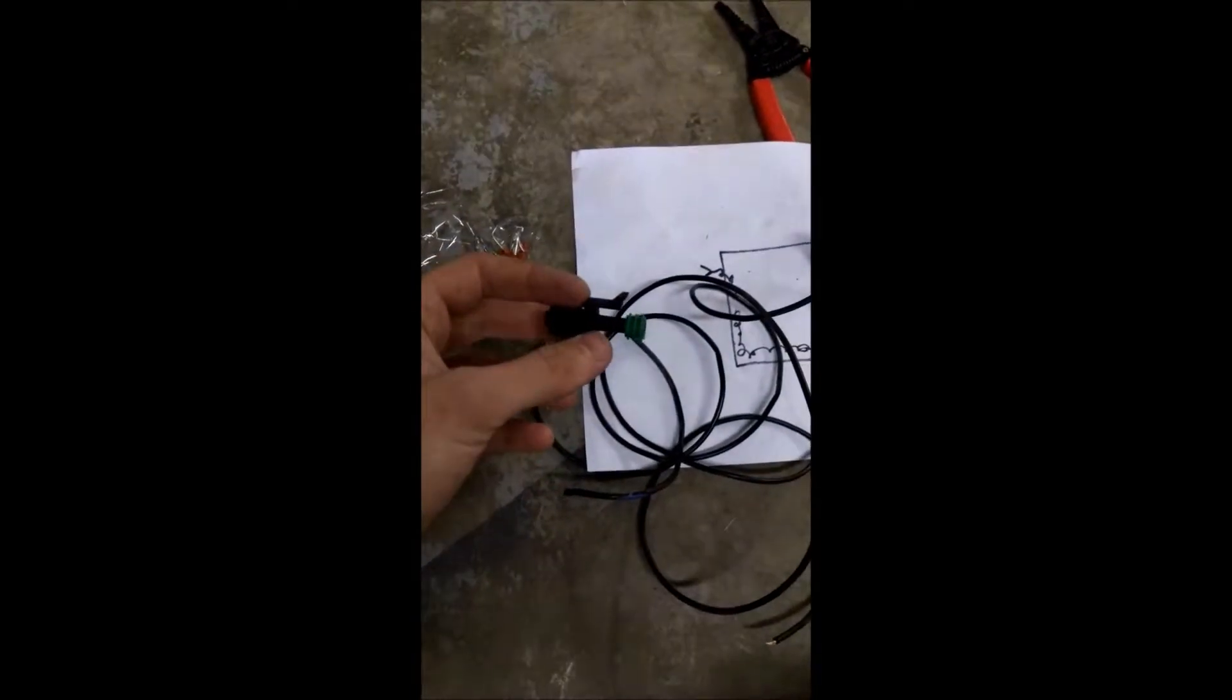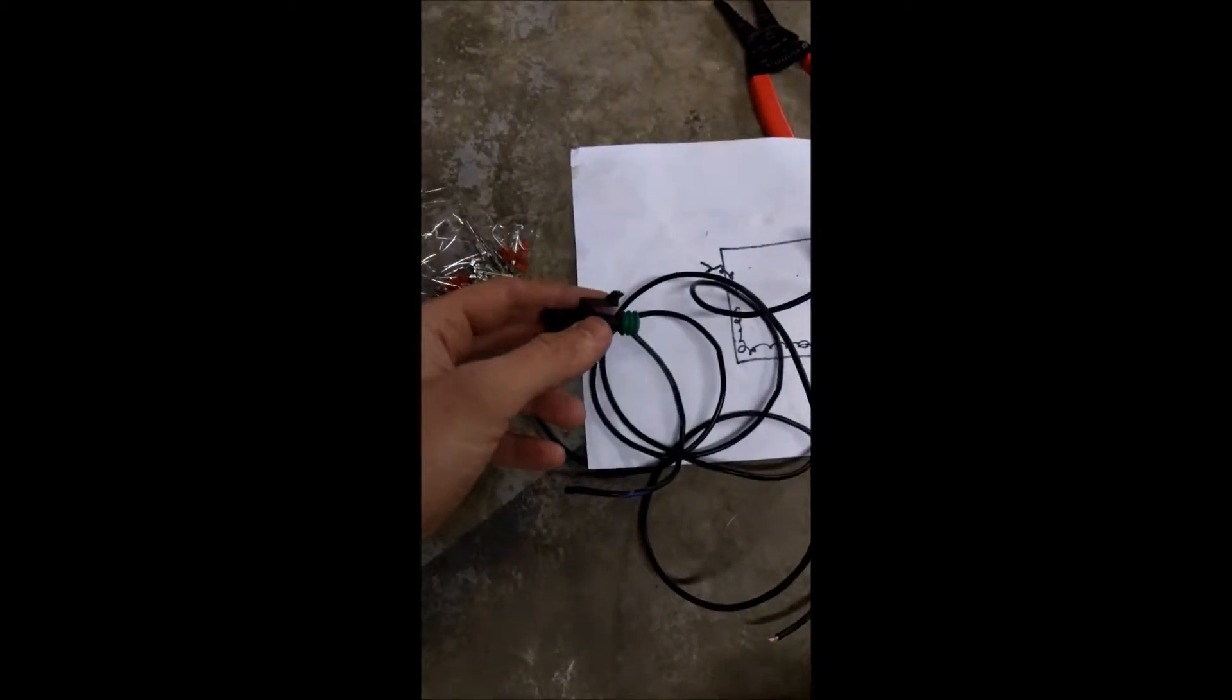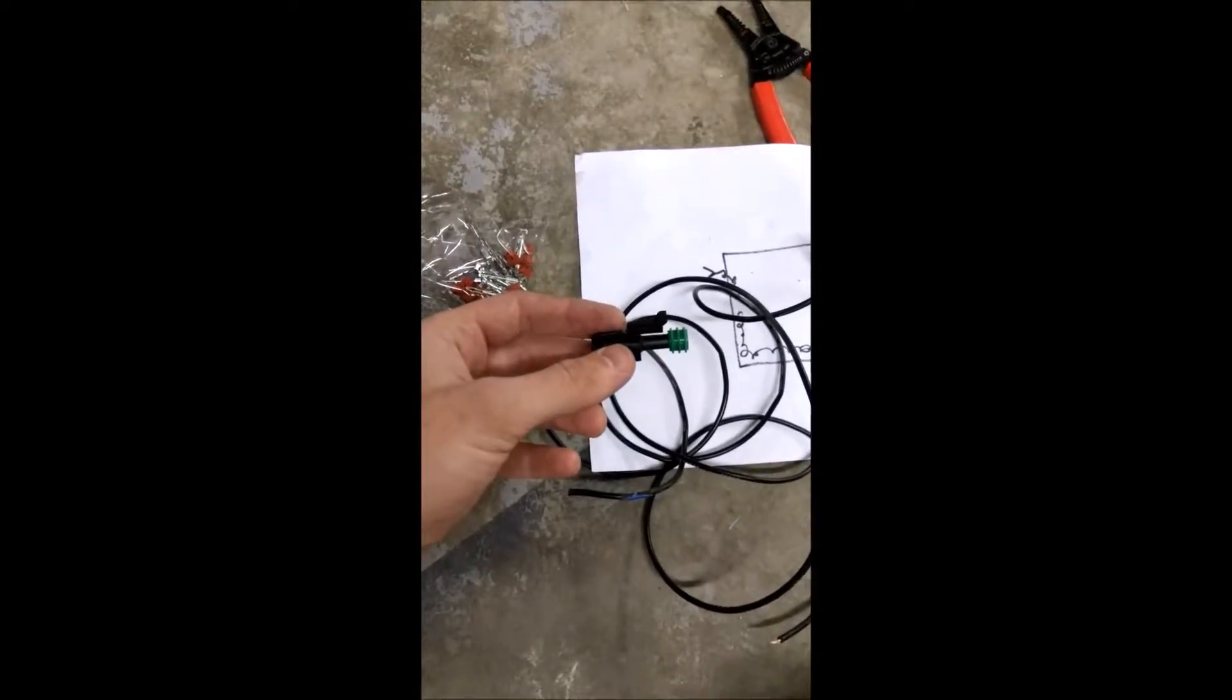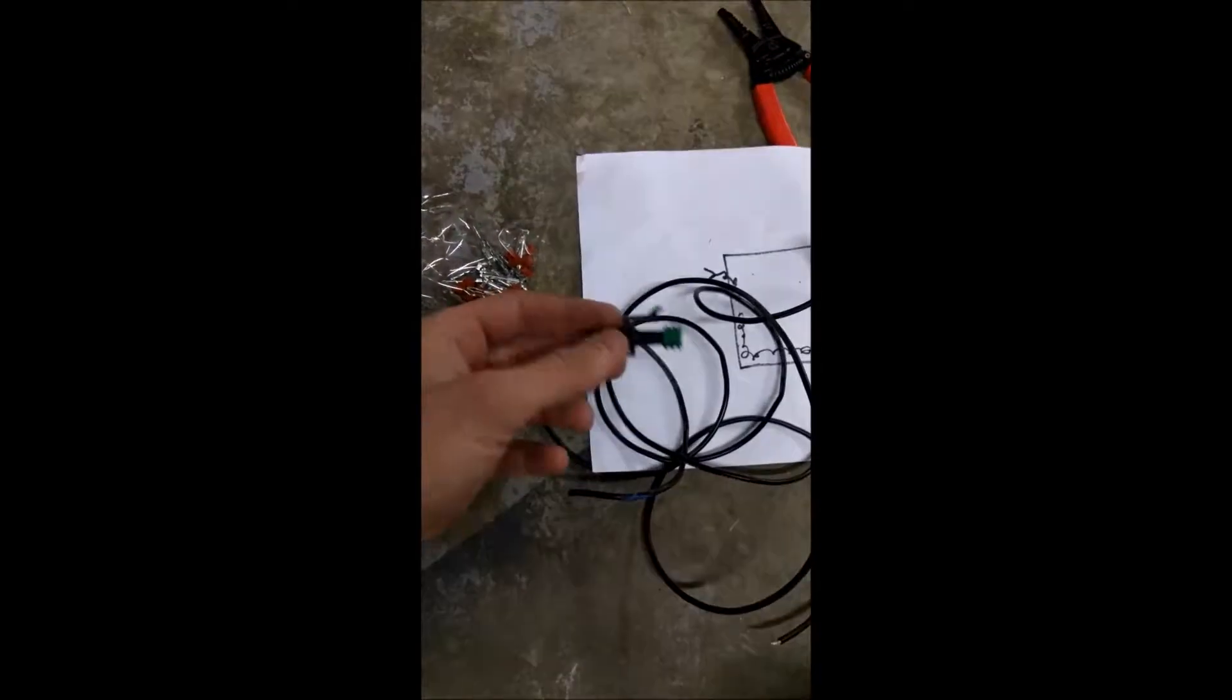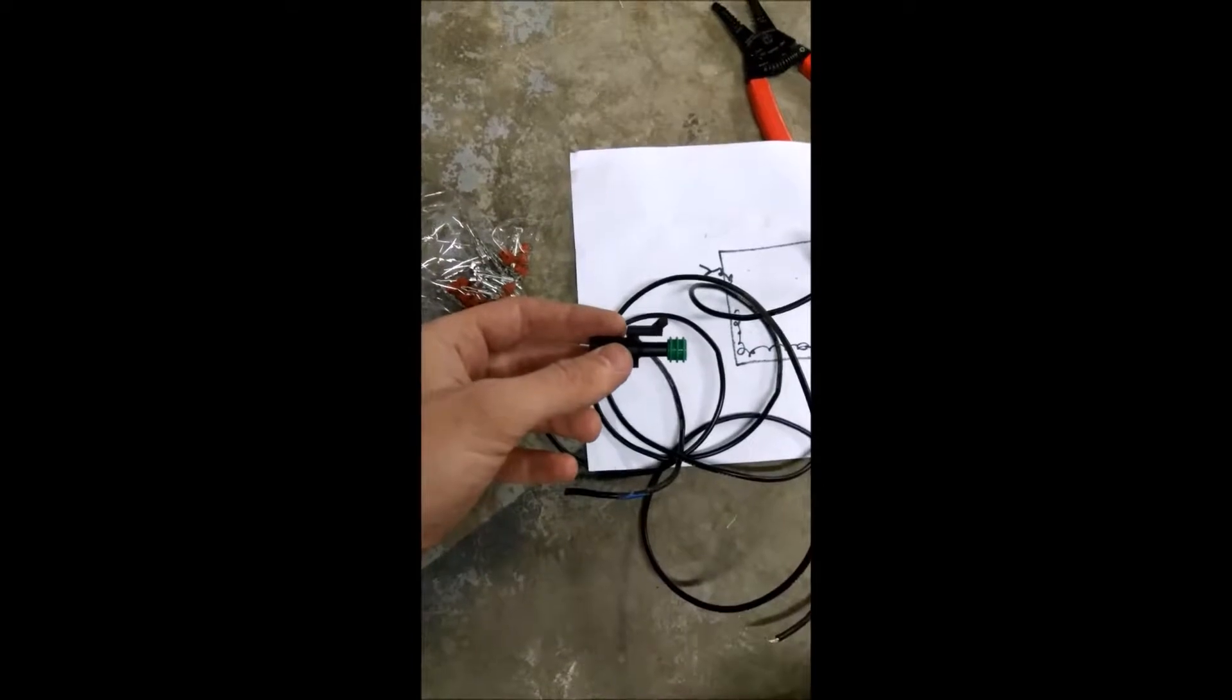I'm going to show how to put together a male end of a weather pack connector. The female end is the same thing, only in reverse with the other parts, so it's pretty straightforward.